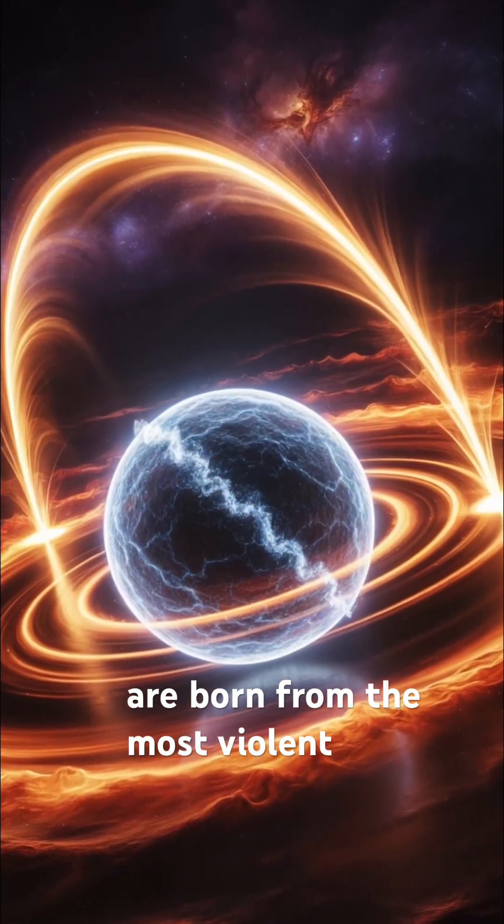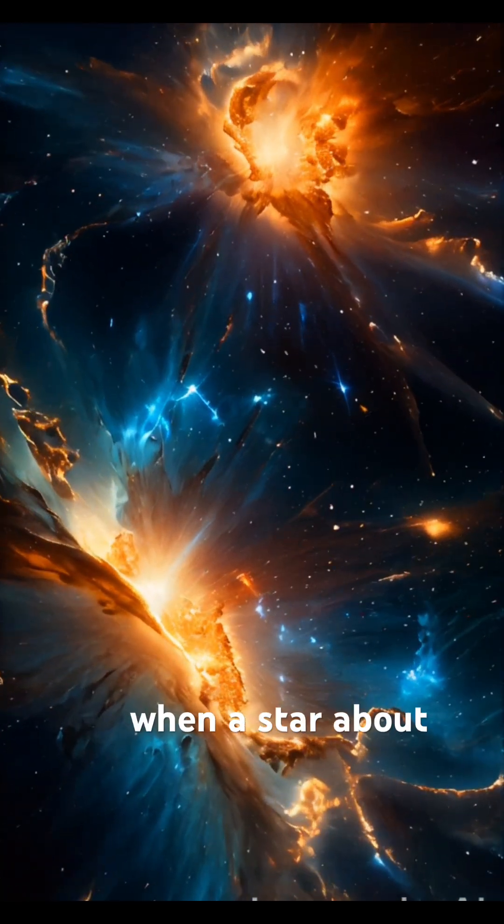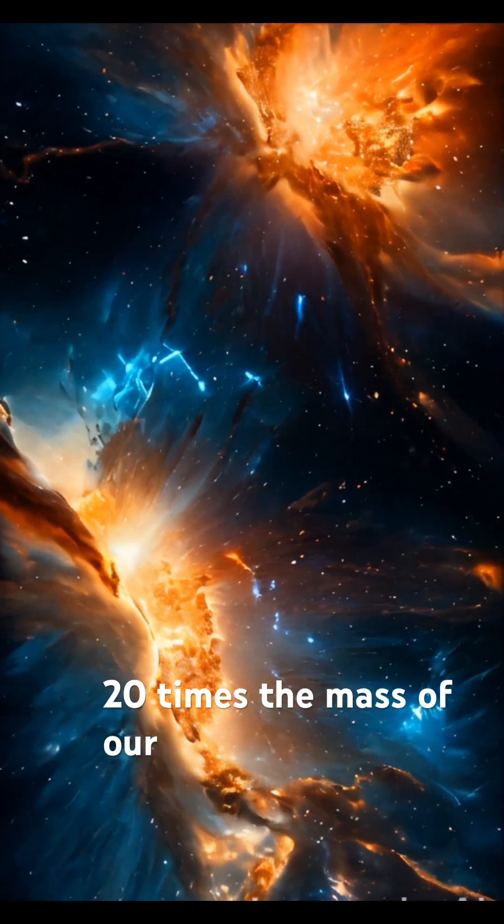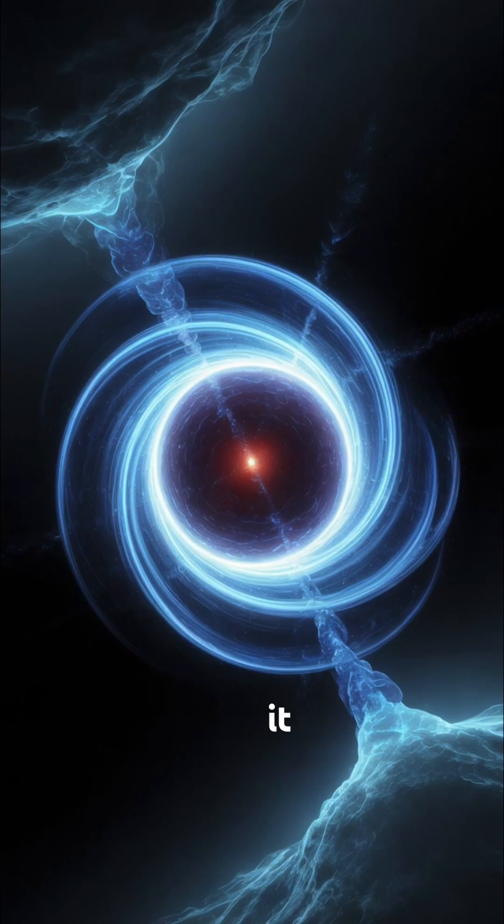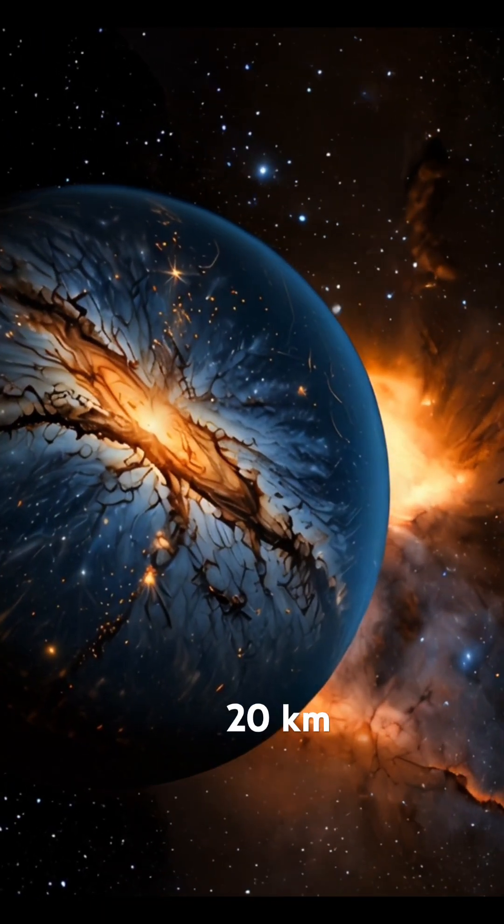Neutron stars are born from the most violent events in the universe, the death of massive stars. When a star about 8 to 20 times the mass of our sun runs out of fuel, it explodes in a supernova, collapsing its core into a sphere only 20 kilometers wide.